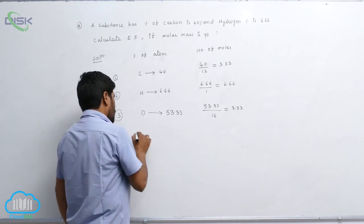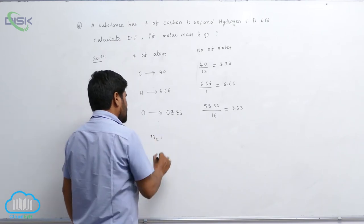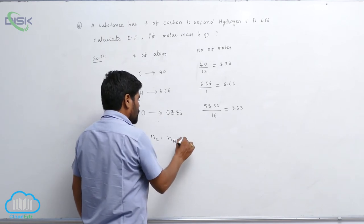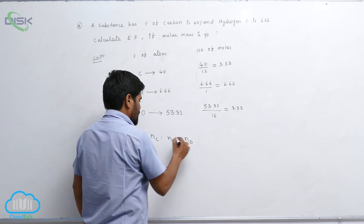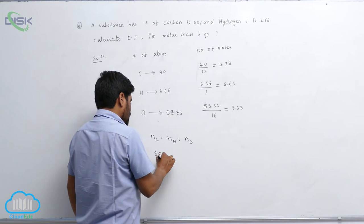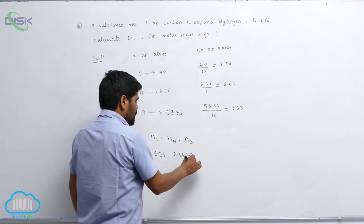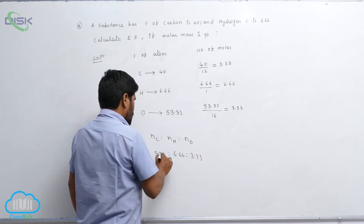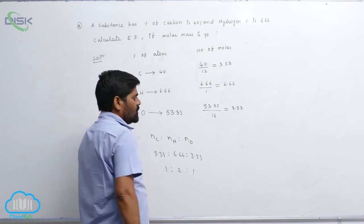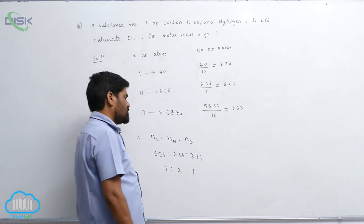Now we find the mole ratio by dividing by the smallest value, 3.33. Carbon: 3.33/3.33 = 1. Hydrogen: 6.66/3.33 = 2. Oxygen: 3.33/3.33 = 1. So the ratio is C:H:O = 1:2:1.